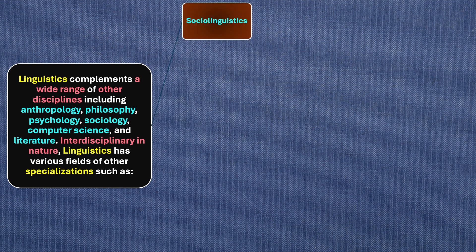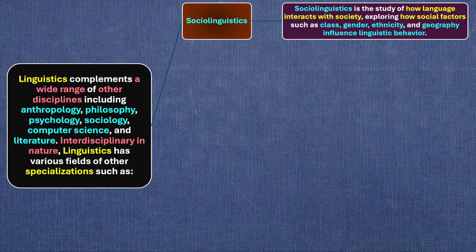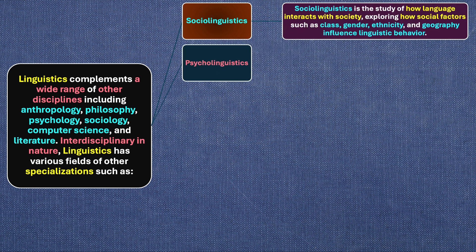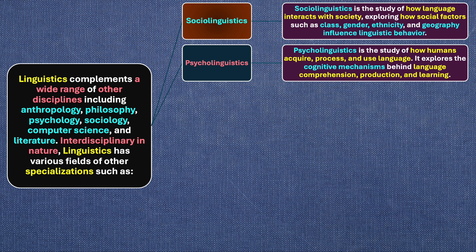Linguistics has various fields of specialization, such as sociolinguistics. Sociolinguistics is the study of how language interacts with society — how language functions and works in society — exploring how social factors such as class, gender, ethnicity, and geography influence linguistic behavior, thought, and outlook.